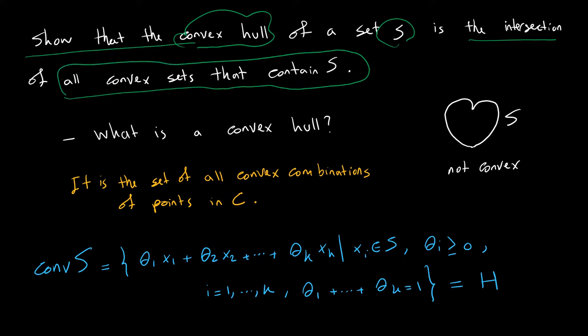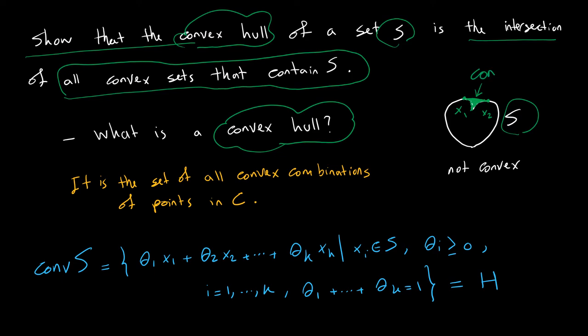Before addressing that statement, let me remind you what a convex hull is — I have a separate video on convex hull and I will link that here. A convex hull is defined for any set. Suppose we have a set S shaped like a heart. This set is not convex, because if I take point x1 and x2, the points between x1 and x2 are not in the set. However, if I take all these points and connect them together, you will see something like a green area, which would be conv(S) — the convex hull of that set S — and that is also a convex set.